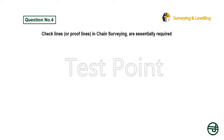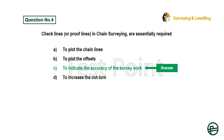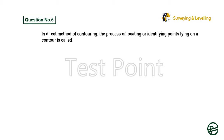Question 4: Check lines or proof lines in chain surveying are essentially required — Option A: To plot the chain lines. Option B: To plot the offsets. Option C: To indicate the accuracy of the survey work. Option D: To increase the out-turn. Answer is Option C: To indicate the accuracy of the survey work.